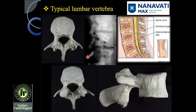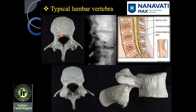Before we go on to lumbar spinal MRI anatomy, we will look at an X-ray and a bone as to how the vertebra looks. This is a top view and side view of a dried bone of vertebral body L4. This is the vertebral body, this is the pedicle, this is the transverse process, this is the mammillary process, this is the lamina, this is the spinous process, and this is the spinal canal.